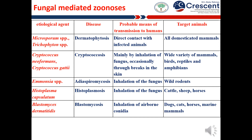For example, Microsporum species causes dermatophytosis through direct contact with infected animals, and this species can infect all domesticated mammals. Cryptococcus species causes cryptococcosis, which is mainly transmitted by inhalation of the fungus and sometimes through breaks in the skin. It also infects a variety of mammalian species, birds, reptiles and amphibians. Adiospyromycosis is caused by Emmonsia species, transmitted by inhalation of fungal spores, and infects wild rodents.